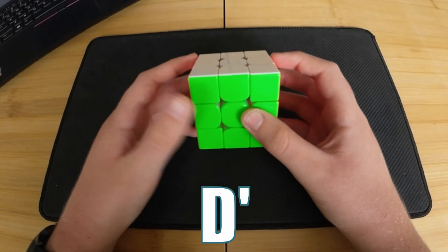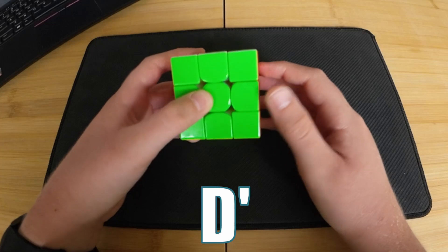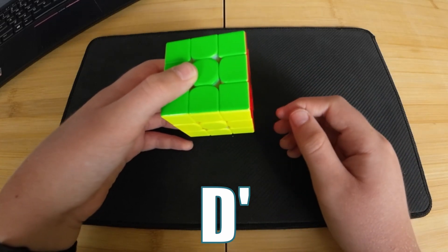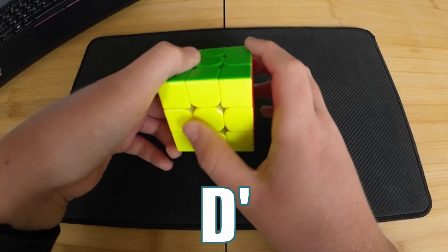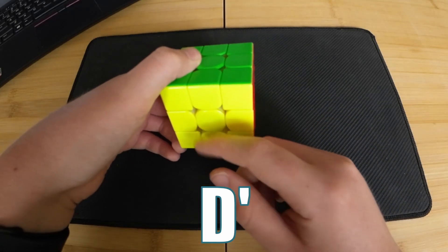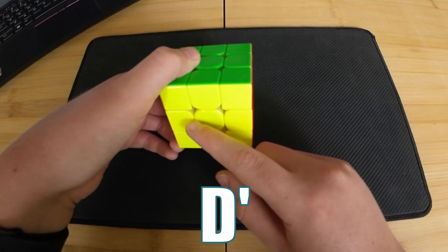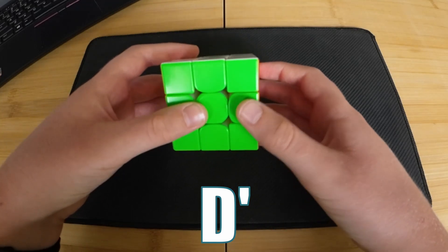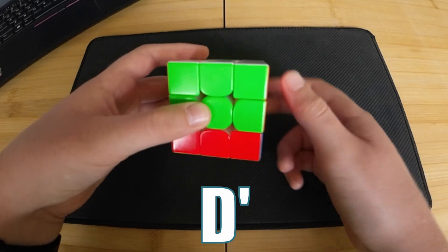Next, we have D', and it's D for down. So it's going to be this bottom face. And then imagining that we brought it to the front, since there's a prime, we're going to want it to go counterclockwise. So that would be this way. And so that would make this move. That's D'.